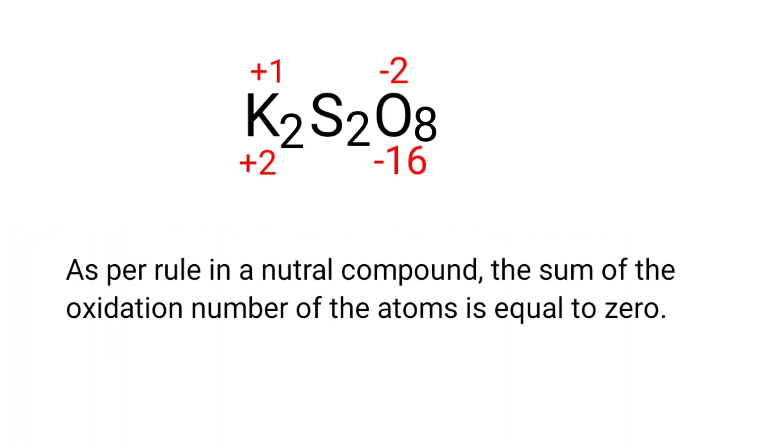As per rule in a neutral compound, the sum of the oxidation number of the atoms is equal to zero. So the numbers along the bottom must add up to zero. So the number under S2 must be plus 14.